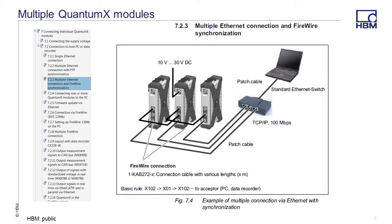The most common method of connecting multiple QuantumX modules via Ethernet is to use the FireWire connection for synchronization and power distribution. Each module requires an Ethernet connection to a switch and then Ethernet from the switch to your PC. The Ethernet cable is only providing data, so synchronization is provided by having a FireWire cable connection between every QuantumX module. The FireWire connection can also provide power for every three modules, with one of those modules having a power supply connection.